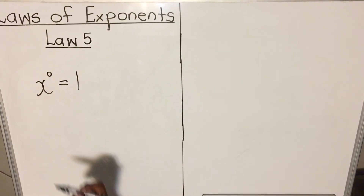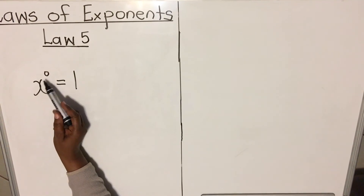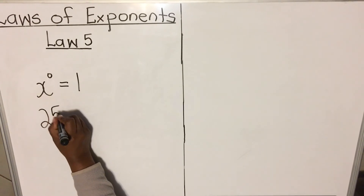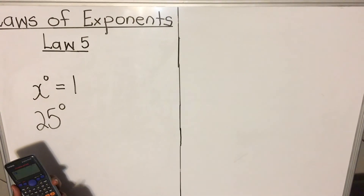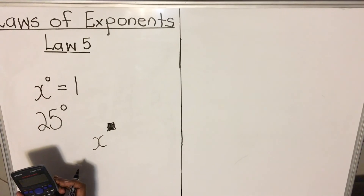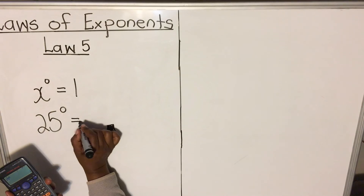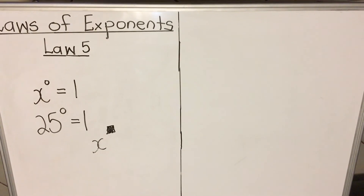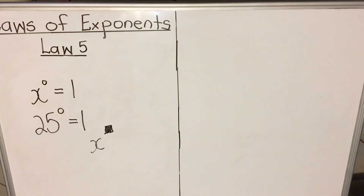Law five says: any number with an exponent of zero equals one — x to the power zero is one. To explain this law, use a calculator. Take 25 to the power zero: press 25, then press the exponent key — the x with a colored box — then enter zero and press equals. It gives you one. So any number to the power zero is one. This is something you will use throughout your future math experience in the higher grades.